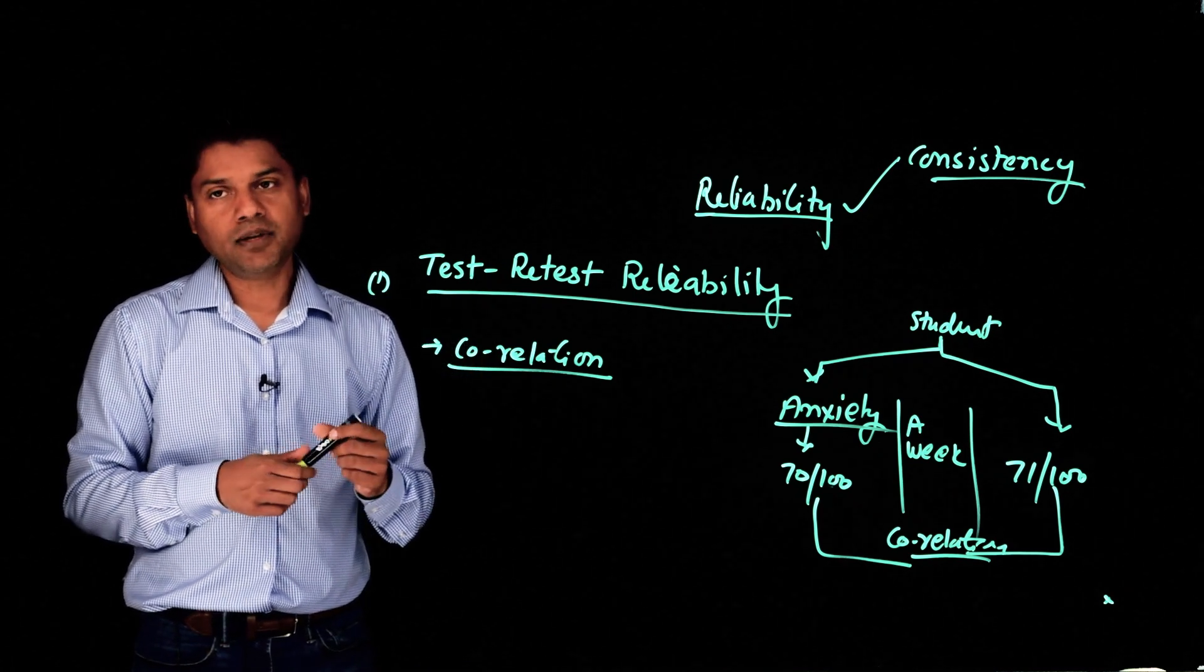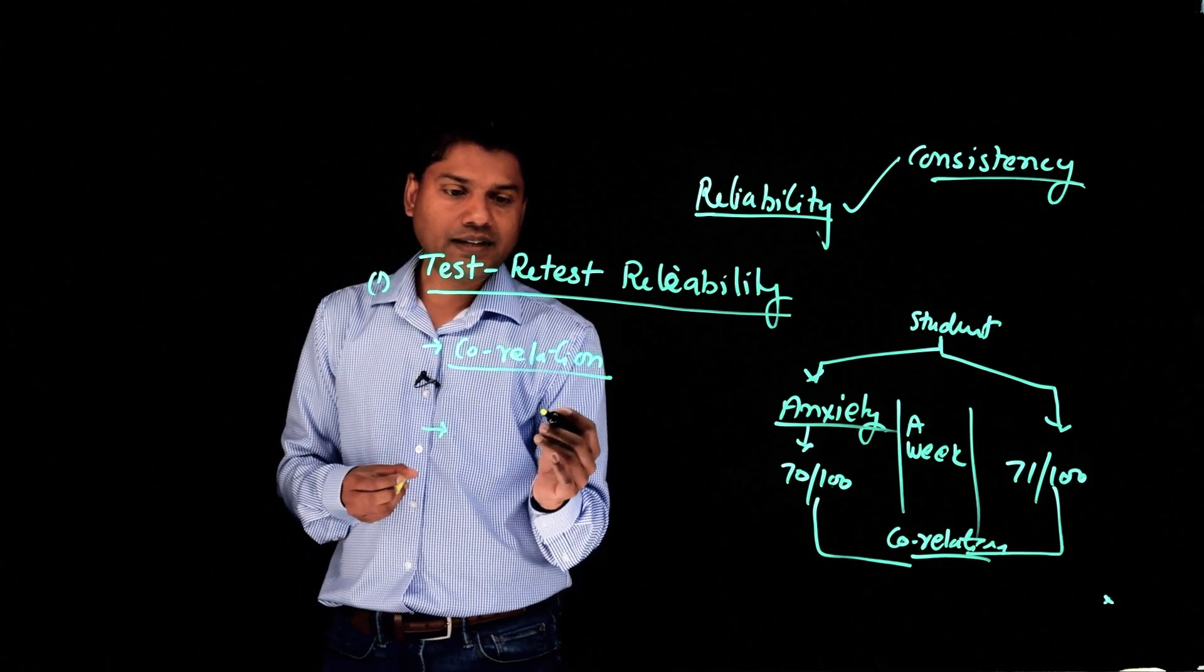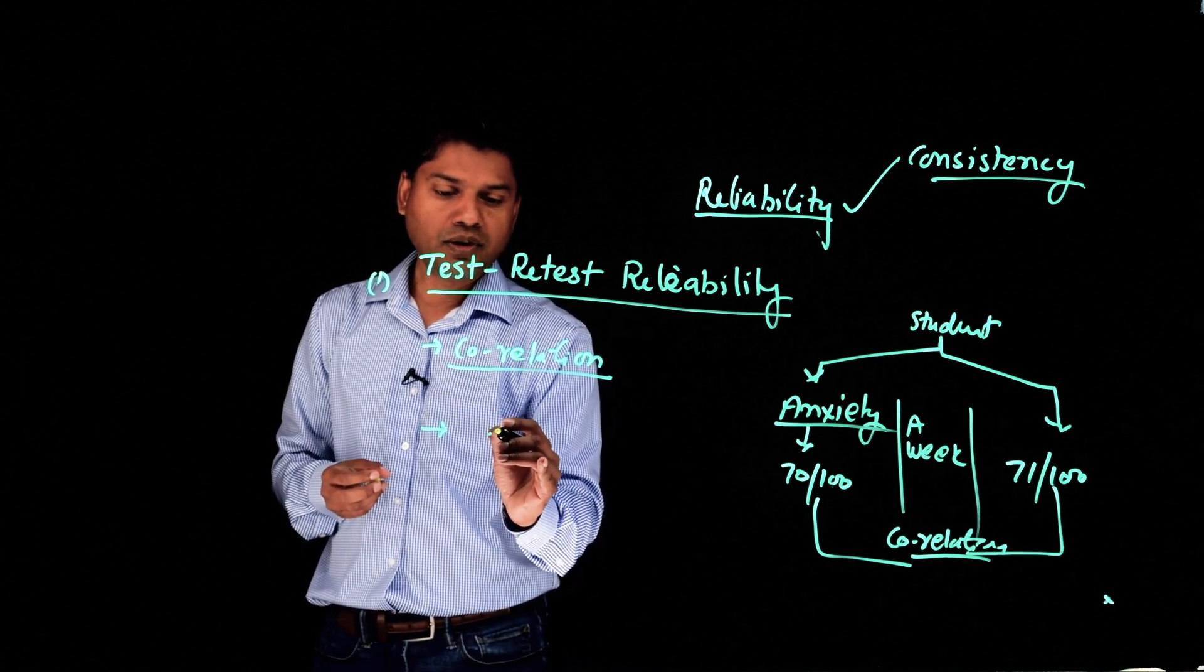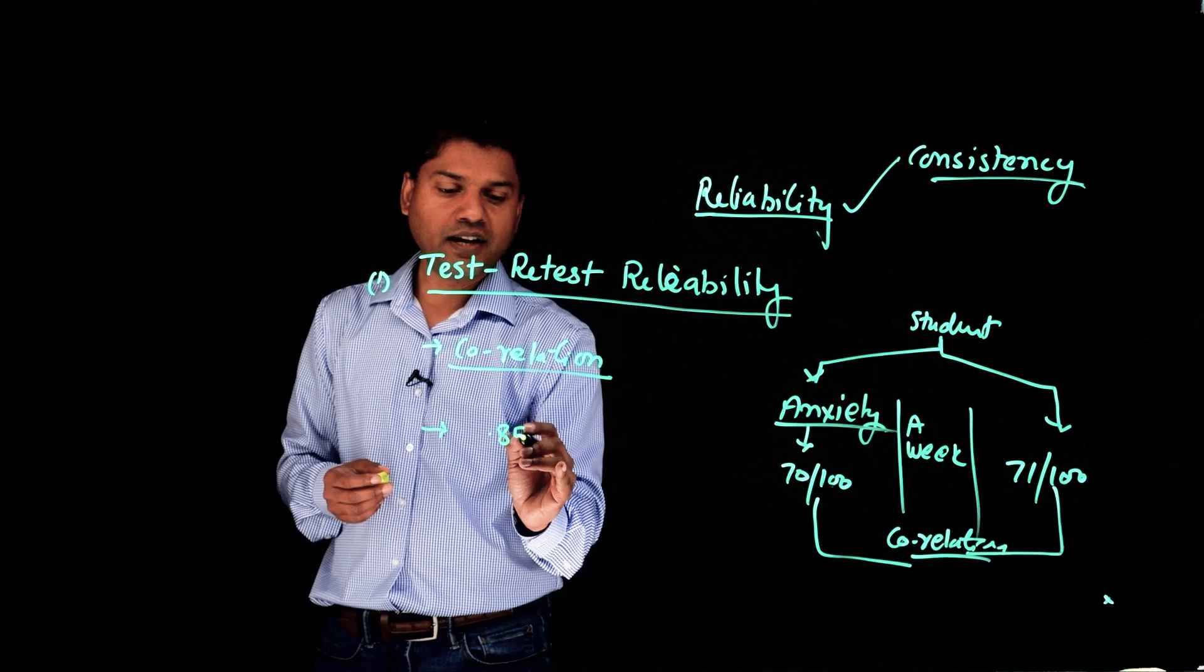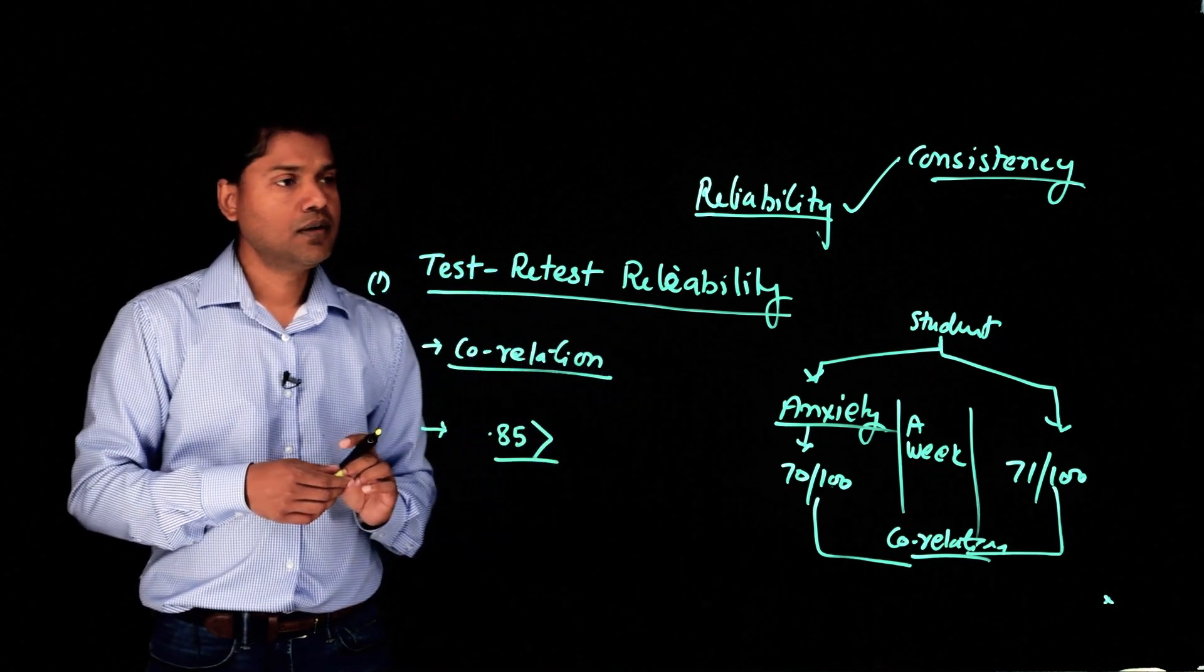Generally, in statistical terms, if a test has anywhere between 0.85 and higher score of correlation, it is called reliable.